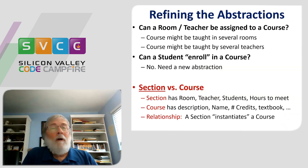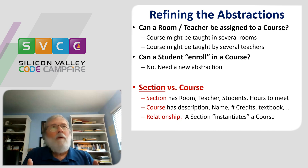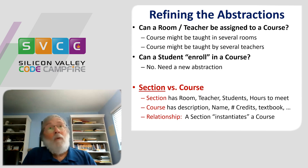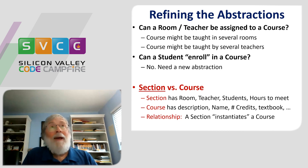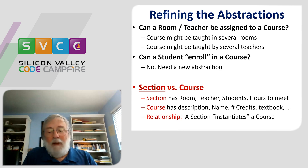The missing abstraction is a section. A course has many sections; each section has a room, a teacher, and students. Essentially, a section instantiates a course. A course might be offered in the winter, and in a given term there might be no sections, one section, or multiple sections. So when you say 'I'm enrolled in a course,' what you're really saying is 'I'm enrolled in a section of a course.' That changes the vocabulary of the application, but it also makes it something that can actually be implemented.